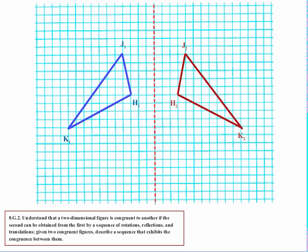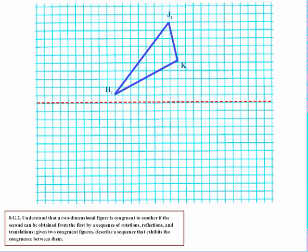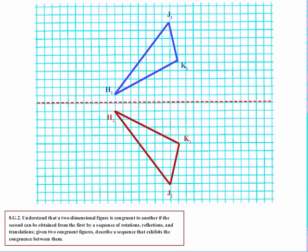Now let's do something similar but using a horizontal line of reflection. Point H1 is one unit away from the line of reflection, so that's the easiest to start with. For segment HJ, count vertically — how far am I from the line of reflection — then count off the same distance on the other side. For segment JK, J is already placed, so we count the vertical distance for K, which is five units straight down, and place K2 there. Connect the points, and now I have a new triangle formed using a reflection across a horizontal line of reflection.